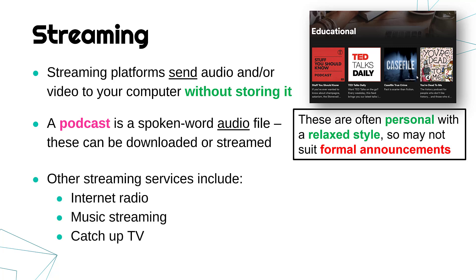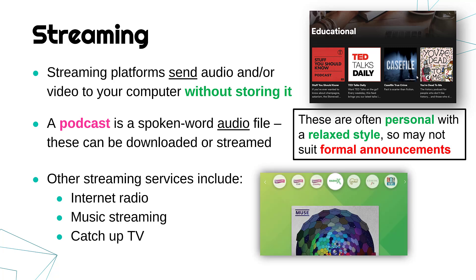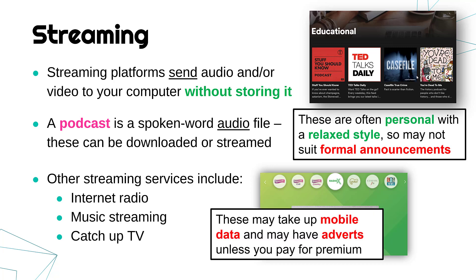Other streaming services include internet radio — for example, Radio X, which you can stream through the internet rather than via dedicated radio. Also music streaming like Spotify or Apple Music, and catch-up TV such as BBC iPlayer or All 4, where you can watch past TV programmes through the internet. Unless you've got unlimited data, you probably need WiFi or a wired connection to watch these, as they take up a lot of bandwidth. They often have adverts, which can be annoying, but generally there'll be a premium service where you can pay to have adverts removed.